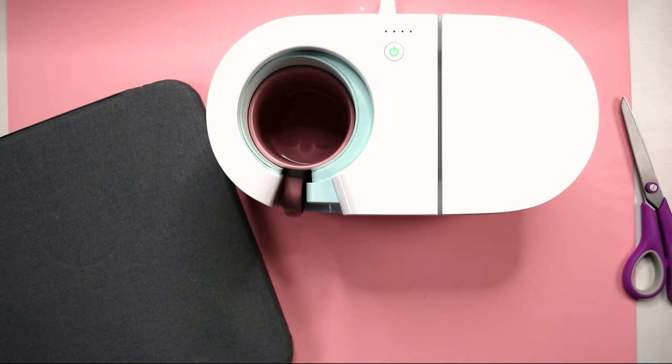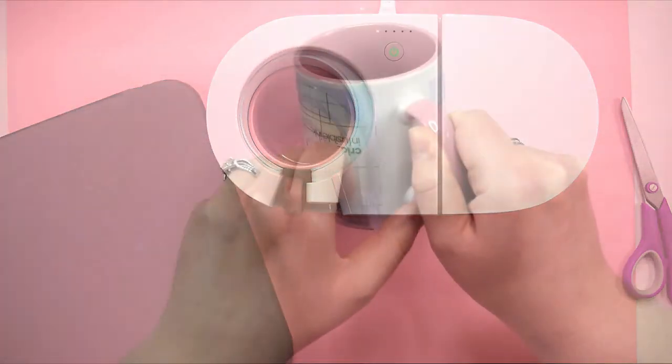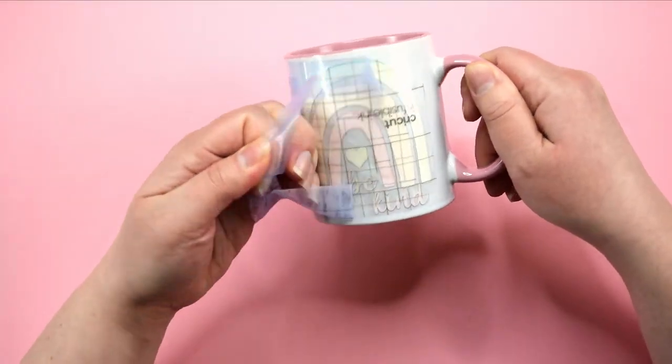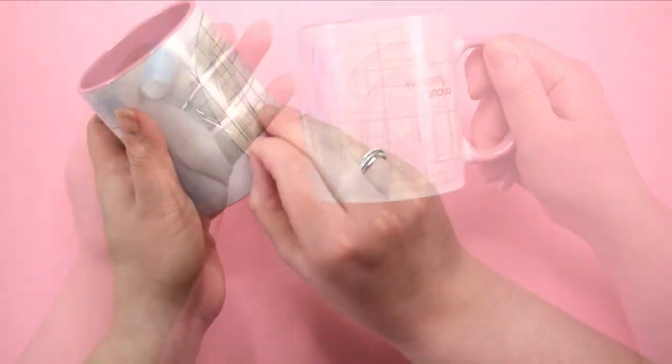Place the mug on a heat resistant surface like the easy press mat and let it cool completely for about 30 minutes. Do not rush this part. I know it's hard to wait but if you pull the design off too early it could cause ghosting on the mug.